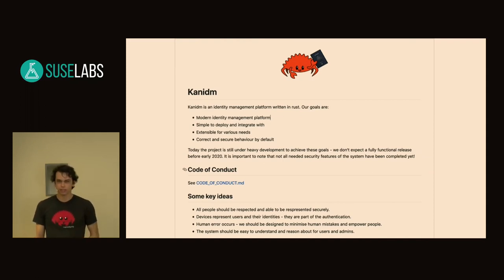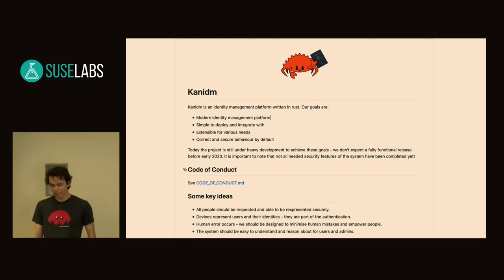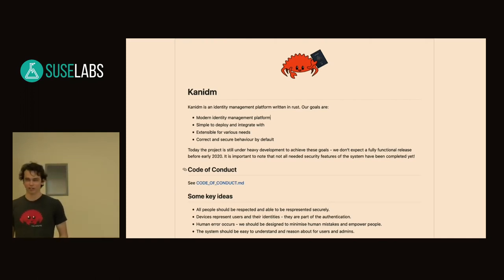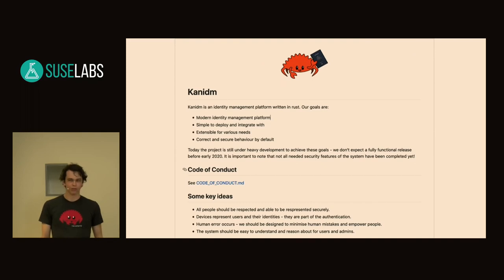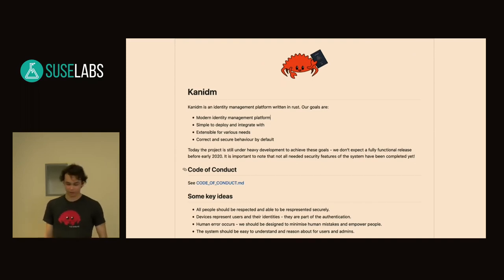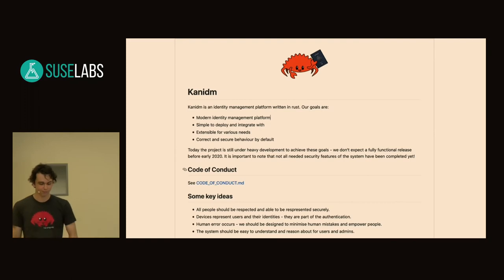I don't want to be continually hand-tied by the issues that we have in our past. I really want it to be extensible for various needs and really secure by default. I will caveat this — it's still under heavy development. I'm literally writing the indexing code at the moment so that searches don't take half a second. I don't expect to have something you could deploy at home before early 2020, but I'm getting ready to deploy this for my RADIUS infrastructure at home.